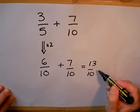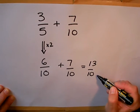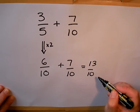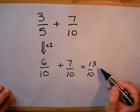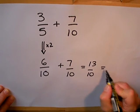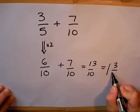Because I have a top-heavy fraction here, what I need to do is to change this into a mixed number. Now remembering that 10 tenths makes one whole one, I've got enough here to make one whole one and three tenths left over.